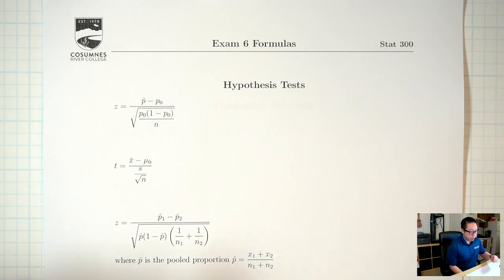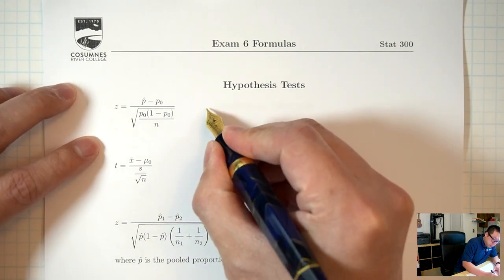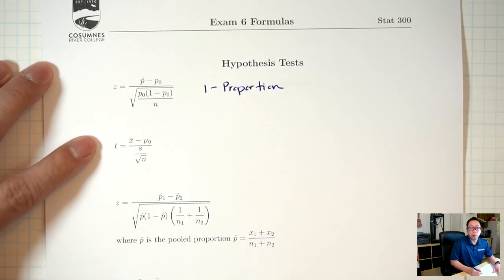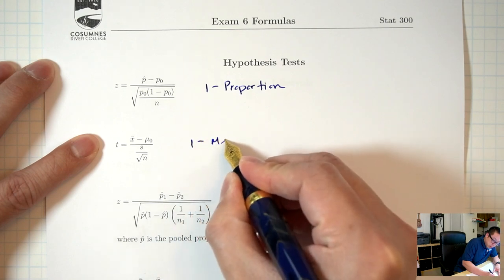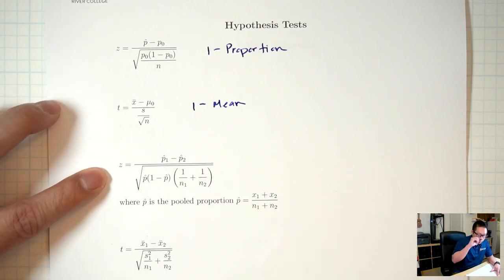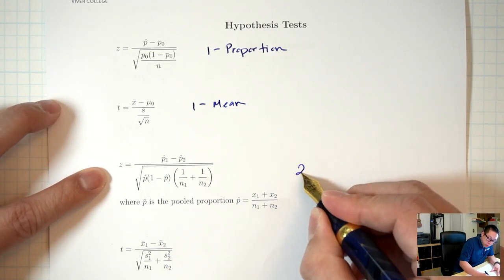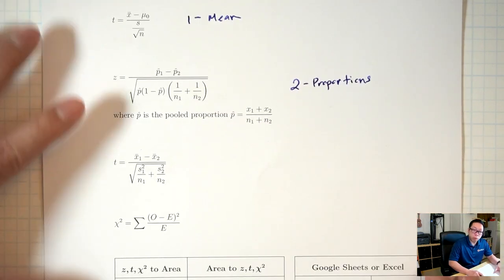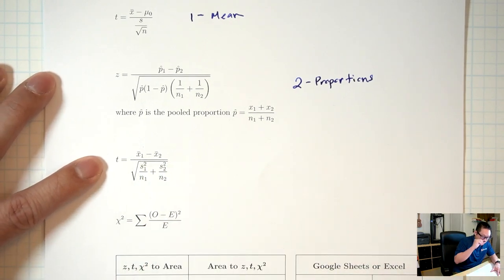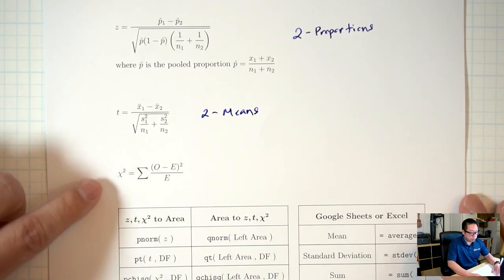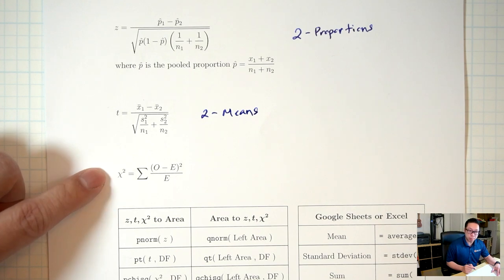We've seen most of these formulas before. The first formula with the z is for the one proportion situation. The second formula with the t is for the one mean situation. The third formula with the z and p1-hat p2-hat is for the two proportions situation. The fourth formula with the t and x1-bar and x2-bar is for the two means situation. The last formula we'll talk about when we get to chapter 12, so we'll skip that for now.